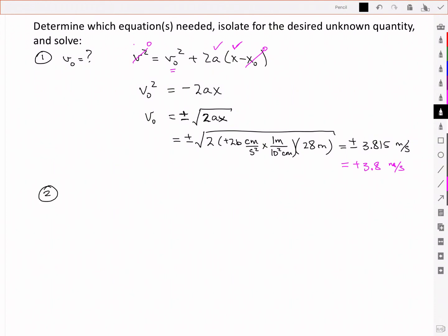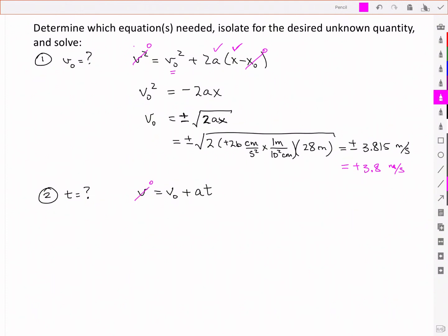Number 2 was to solve for the time at which it comes to rest. And we identified, this is our useful equation, v equal to v-naught plus at, where again I can take a little inventory, this is 0, this I now know from up above, the v-naught I know from up above, the acceleration I know, and the time is what I'm trying to solve for. So let's rearrange, and solve for t.